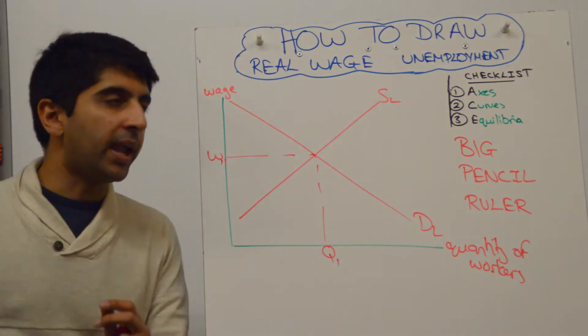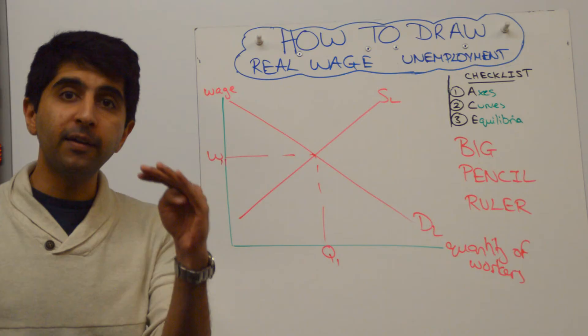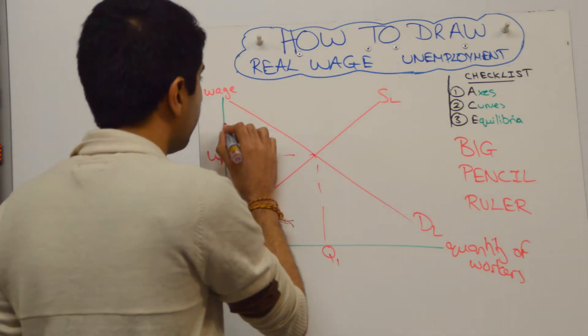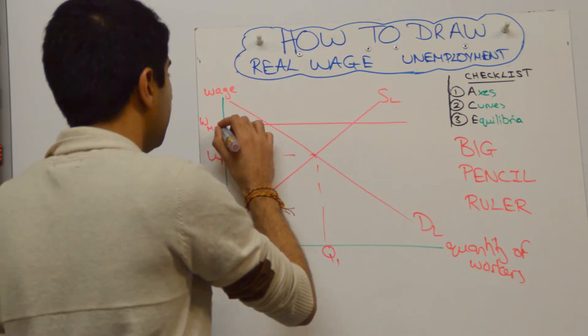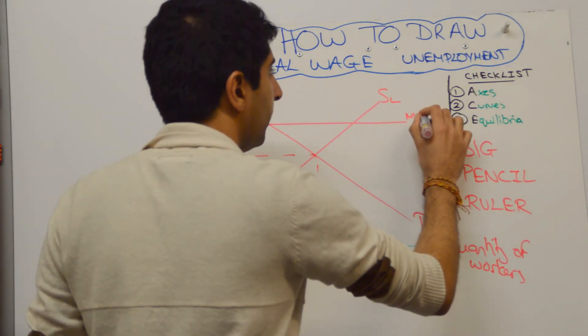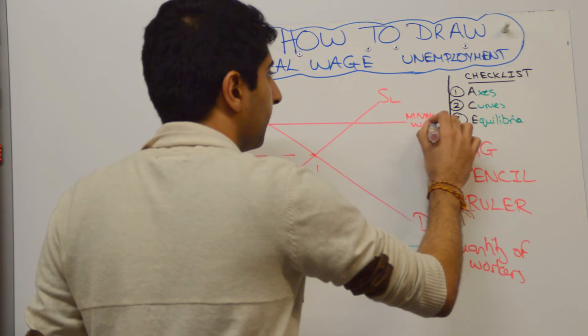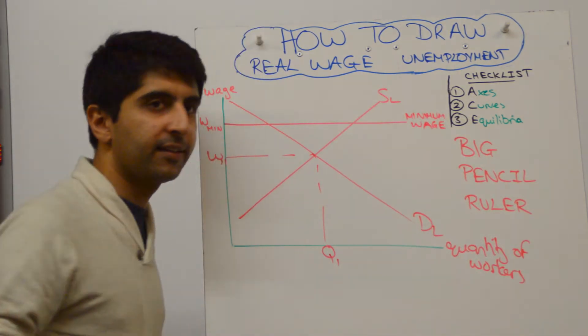Now you want to draw your minimum wage. Your minimum wage is going to be above the equilibrium wage rate. Draw it like that, and you can call it Wmin, and stick minimum wage here as well. Just be ultra-clear for the examiner.